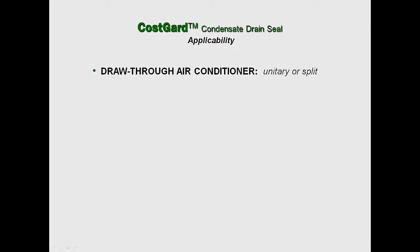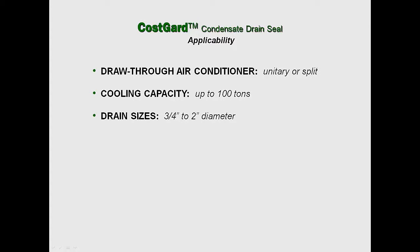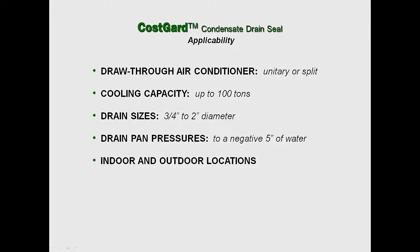The CostGuard condensate drain seal is applicable to any draw-through air conditioner, unitary or split, with cooling capacities up to 100 tons. Drain sizes range from three-quarter inch to 2 inches in diameter, drain pan pressures to negative 5 inches of water, both indoor and outdoor locations, and all kinds of climates — hot and humid to cold and dry.